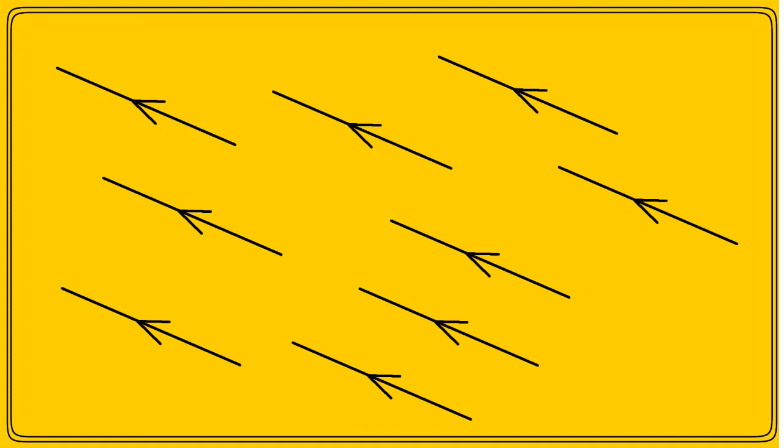In this diagram, we see a lot of vectors that are the same length and are pointing in the same direction. If I call one of them vector a, this one, let's say, then all the others are vector a too.